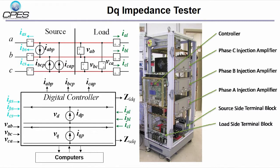The principle of the tester can be simply explained by this diagram. The computer gives the measurement command to the digital controller. Digital controller first synchronizes with the system to be tested. Then it gives the perturbation in DQ frame. These perturbation signals are injected to the system by transferring them to ABC frame.